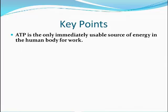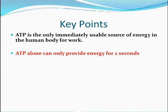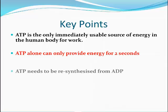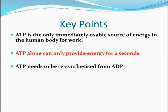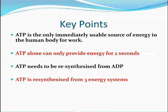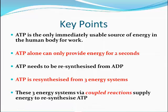Finally, some key points to take note of. ATP is the only immediately usable source of energy in the human body for work. ATP alone can only provide energy for two seconds. ATP needs to be re-synthesised from ADP. And ATP is re-synthesised via three energy systems, which through coupled reactions supply energy to re-synthesise ATP.